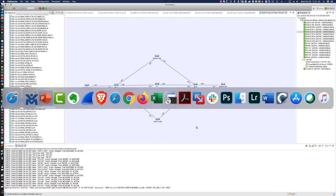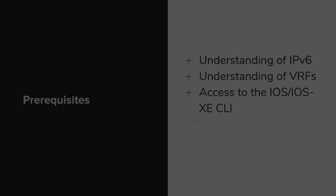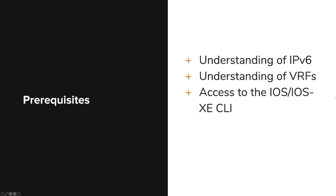Let's talk about some of the prerequisites related to the course. The first prerequisite is an understanding of IPv6, as those are the first modules we'll be covering with 6PE and 6VPE. You also need to have an understanding of Virtual Routing and Forwarding, or VRFs. Finally, you're going to need access to the IOS or IOS XE CLI. Remember, one of the most important facets of learning is active learning — actually doing the configuration work and typing it out, whether on physical equipment, the INE rack, or some other type of simulator, is critical to your success.